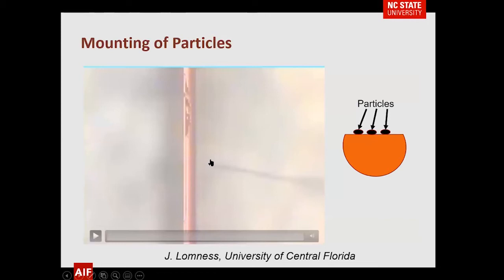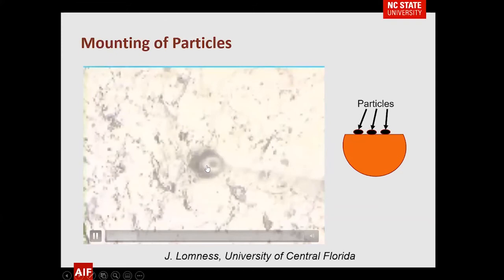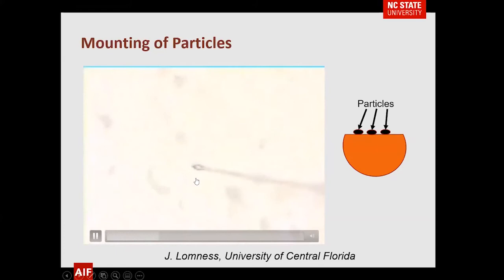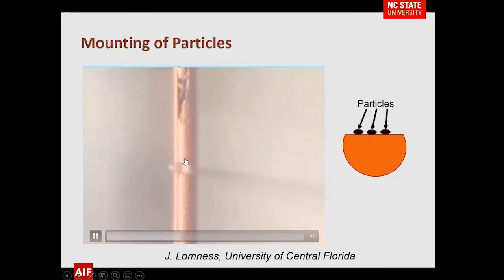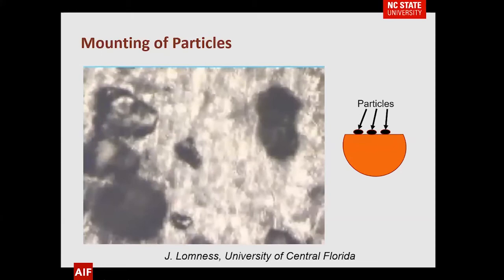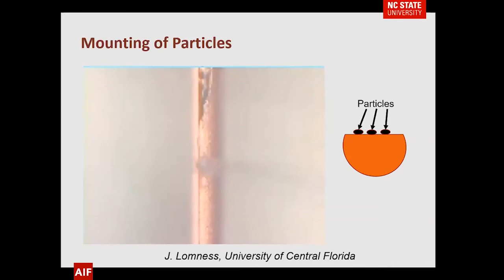Here's another mounting method. One of Lucille's students, Jan, wanted to look at particles. Using actual epoxy, she dips the needle into it, spreads it on top of the grid, and then goes over with epoxy on the tip — making it easy to pick up a particle. She brings the particle over and deposits it directly on the grid. There's no lift-out; you're simply placing particles directly on the grid for final thinning. We've used this successfully at NC State for particles used in 3D printing.